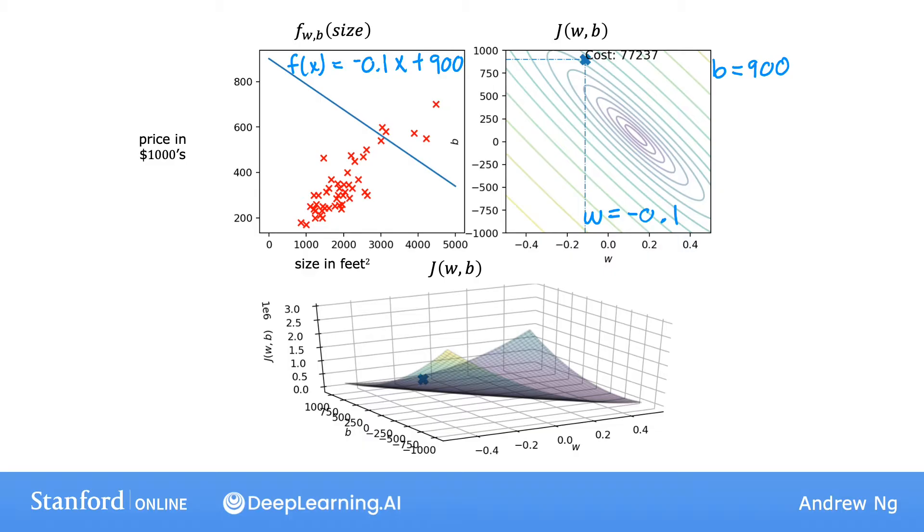Now if we take one step using gradient descent, we end up going from this point of the cost function to this point just down and to the right. Notice that the straight line fit has also changed a bit. Let's take another step. The cost function has now moved to this third point, and again the function f of x has also changed.